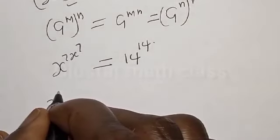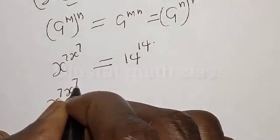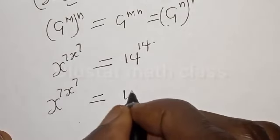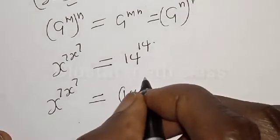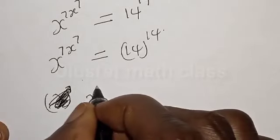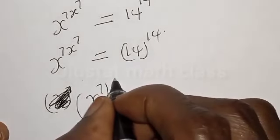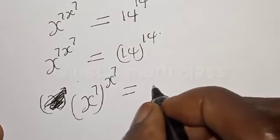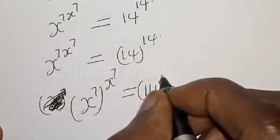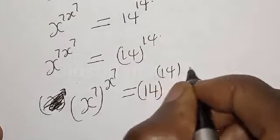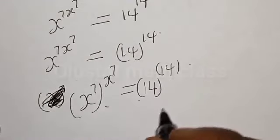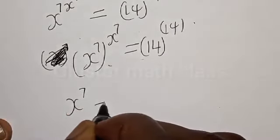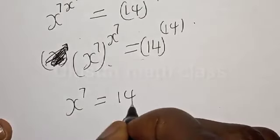So we have s raised to power 7·s raised to power 7, is equal to 14 raised to power 14. Since this side equals that side, we can compare: s raised to power 7 equals 14.